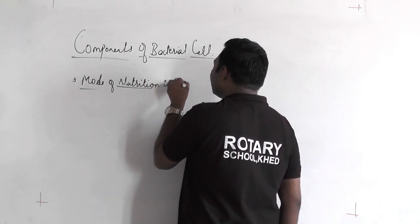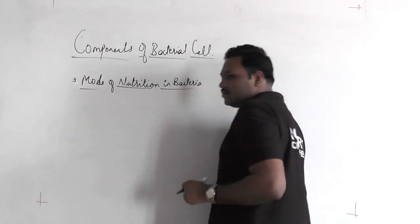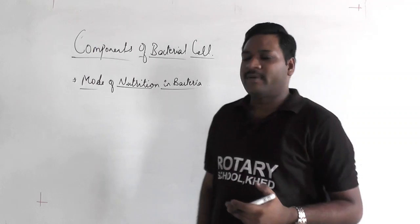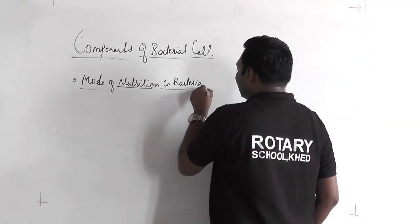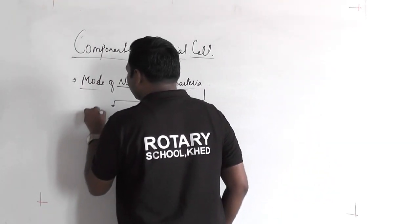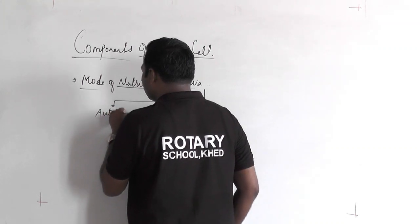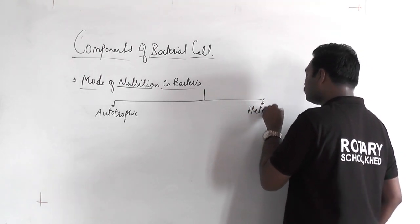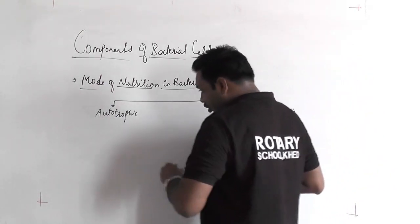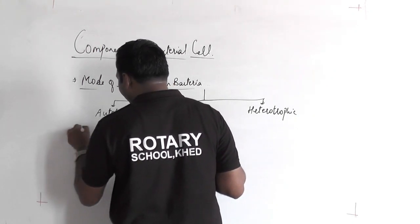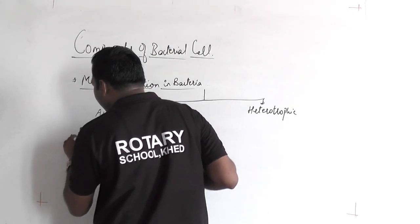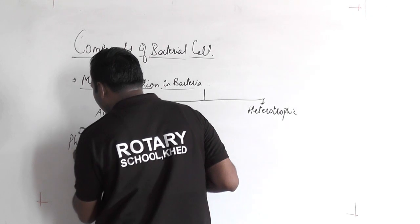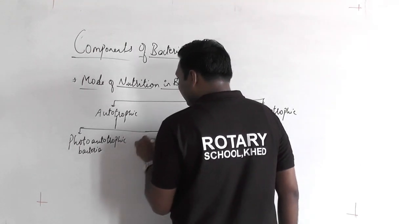Some bacteria are autotrophic — specifically photo-autotrophic — and some are also chemo-autotrophic. Mode of nutrition in bacteria can be autotrophic or heterotrophic. Autotrophic mode of nutrition can be studied in two different groups: photo-autotrophic bacteria and chemo-autotrophic bacteria.